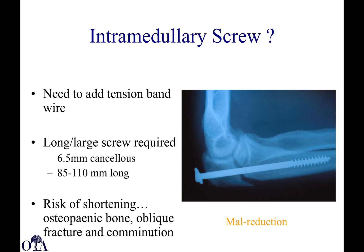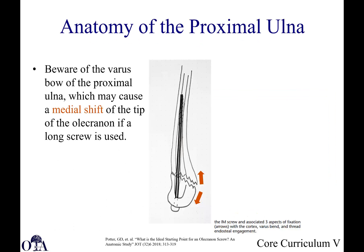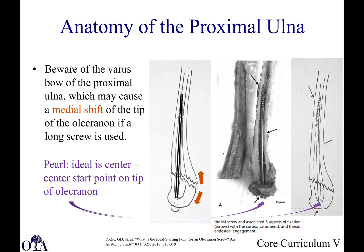An intramedullary screw is also an option, popular at some centers. You will still need to add a tension band wire around the washer. You typically need a long screw — 85 to 110 millimeters — usually a 6.5-millimeter cancellous screw. There is some risk of shortening with osteopenic bone, oblique fractures, or comminution. Because of the shape of the proximal ulna with its 12 degrees of varus angulation, a long screw can cause a medial shift of the olecranon tip. The ideal is center-center placement starting at the tip of the olecranon to avoid that complication.